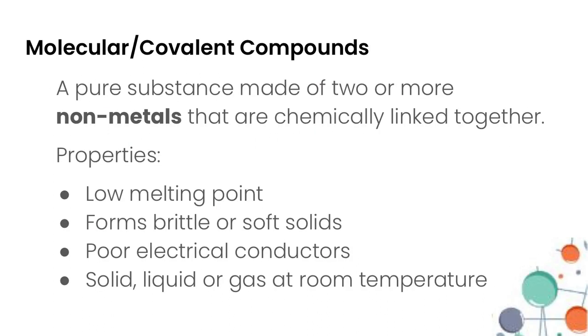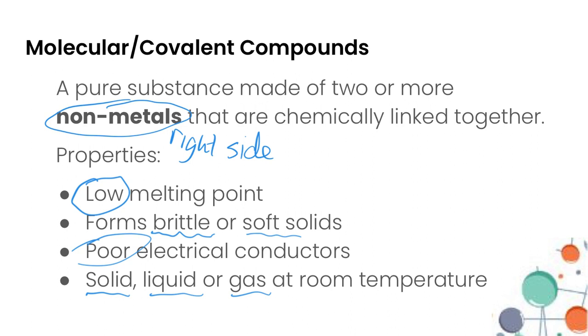Let's talk now about molecular or covalent compounds. So these are pure substances that are made up of two or more non-metals. Remembering non-metals are on the right side of our periodic table and they are chemically linked together. Some common properties of covalent compounds, especially relative to ionic compounds, they have pretty low melting points. They form substances that are brittle or soft. They're very poor electrical conductors and they can take on various forms so they could either be solid, liquid, or gas at room temperature and that is due to their low melting points.